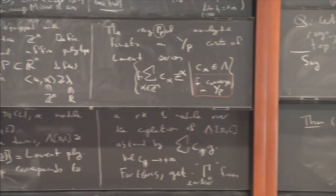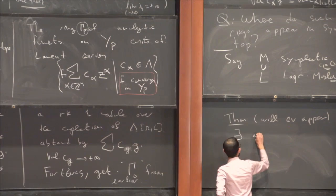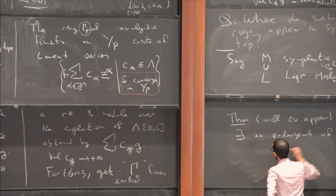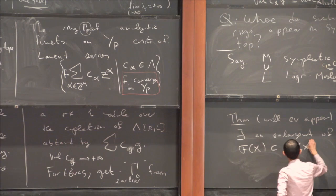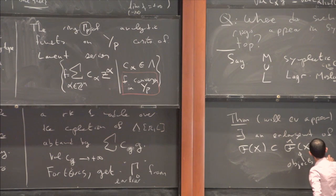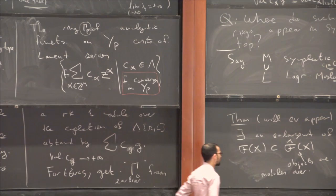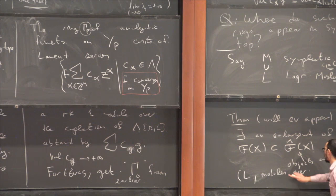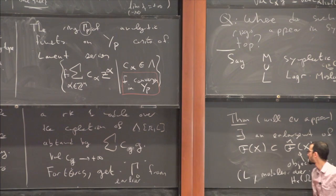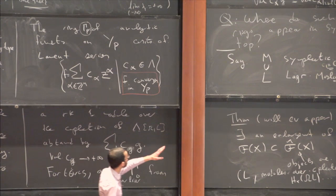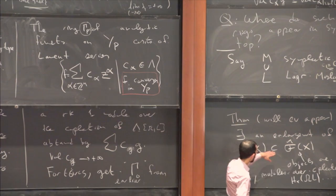There exists an enlargement of the Fukaya category of X — let's put the Fukaya category inside this kind of completed Fukaya category. The objects here are pairs L together with some kind of module over the completion of the homology of the based loop space. This is the place where these rings of analytic functions appear naturally. This category behaves extremely well in terms of symplectic topology: if you take a Lagrangian equipped with such a module and take a Hamiltonian isotopy, there is essentially an equivalence associated to Hamiltonian isotopies.